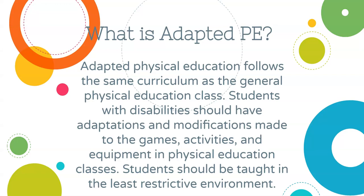So what is adapted PE? Adapted physical education follows the same curriculum as the general physical education class. Students with disabilities should have adaptations and modifications to the games, activities, and equipment in physical education classes. Students should be taught in the least restrictive environment — meaning students with disabilities should be getting the same curriculum and content as their general ed peers, but with changes to the activity, games, equipment, and the area they are playing in.